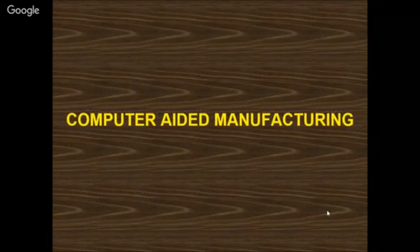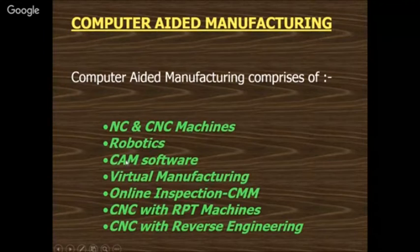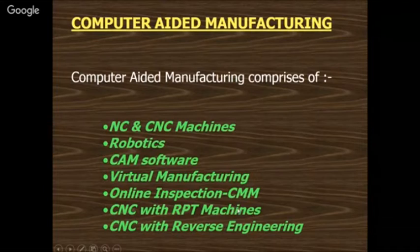CAM consists of NC/CNC machines, robotics, and CAM software. CAM software options include MasterCAM, GibbsCAM, SurfCAM, DellCAM, Pro-E Pro-Manufacturing, Ideas Manufacturing, and CATIA Manufacturing. Virtual manufacturing allows simulation of tool movement during machining. Online inspection of CMM (Coordinate Measuring Machine) is also possible. The trend is using CNC with RPT machines and CNC with reverse engineering.